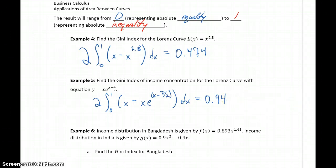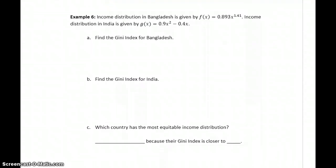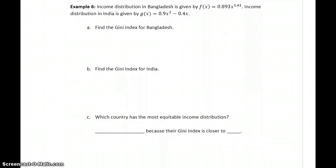So getting these results is nice, but so far we're just coming up with arbitrary values. What we want to do is put this in some context to see the types of questions that we can answer. So in example 6, we have Lorenz curves for both Bangladesh and India. We want to find the Gini index for both of these countries.